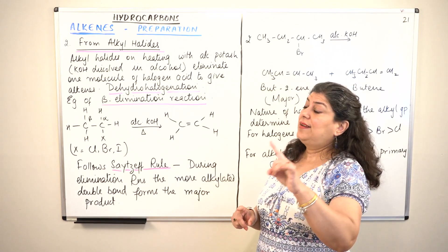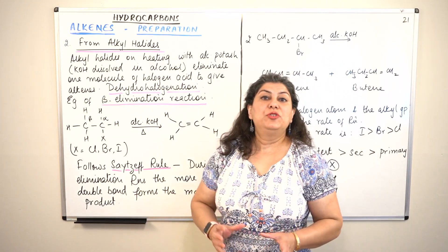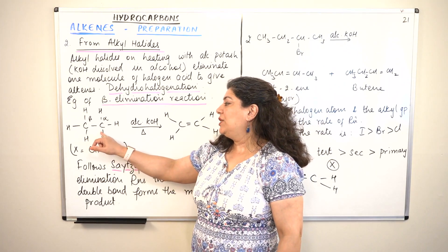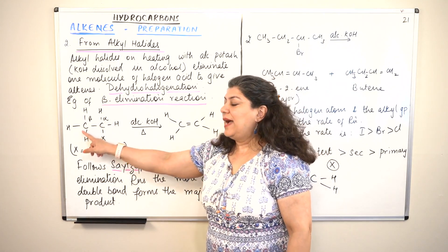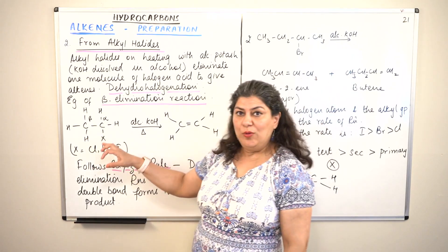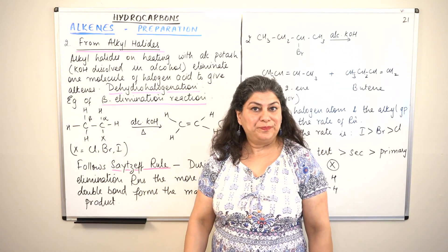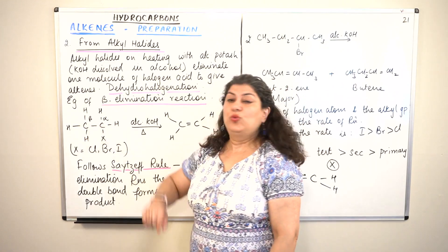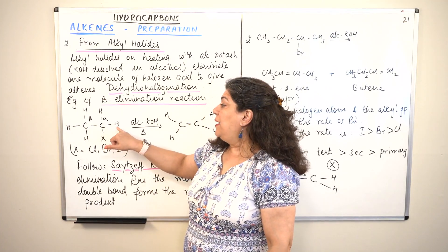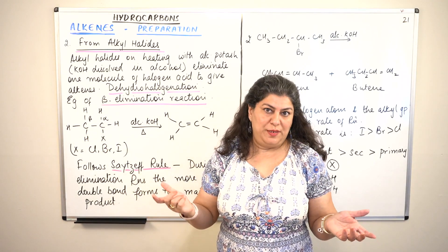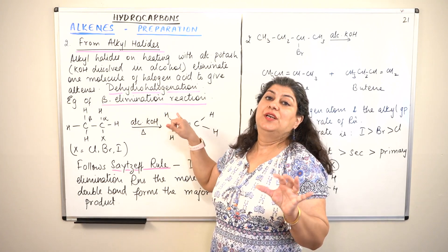This reaction has another name: the beta elimination reaction. An alpha carbon is the carbon to which the functional group — here the halogen — is attached. The carbons next to the alpha carbon on either side are called beta carbons. So this elimination is called a beta elimination reaction.